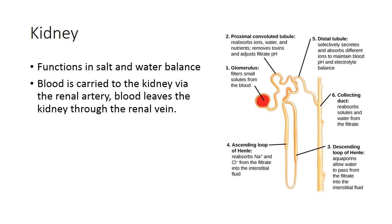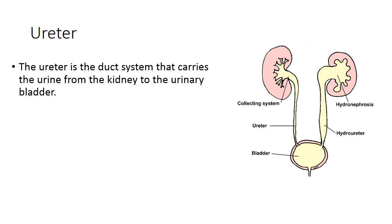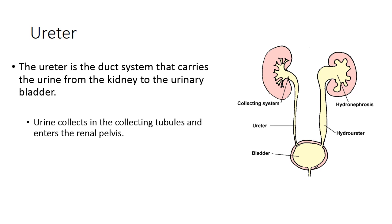All the urine created in the kidney is collected within the collecting ducts. The kidney has two parts you need to know: the cortex and the medulla. The cortex is the outer, typically lighter-colored portion, and the medulla is the center portion. In the cortex, the glomerulus is located along with collecting tubules such as the proximal convoluted tubule and distal tubule. The medulla has the ascending loop of Henle, where water, ions, and nutrients are reabsorbed. The ureter is the duct system that carries urine from the collecting tubules to the urinary bladder.